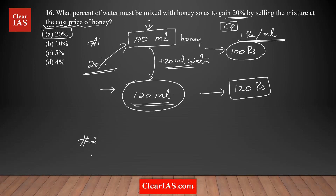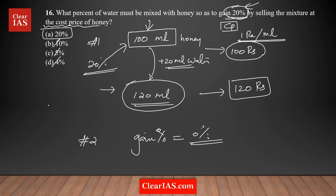Approach number two is pure logic. If you're not mixing water and you're selling at the same price as you bought, there is no profit — the gain is zero. So if there is no water added, it's zero percentage gain. It's clearly given that you're getting 20 percentage profit, so you can eliminate all options less than 20 — options A, B, C, D — because by mixing only 5 or 4 percentage water and selling at the same price, you will never make 20 percentage profit. Using that logic to eliminate remaining options, your answer is option A, which is the right answer.